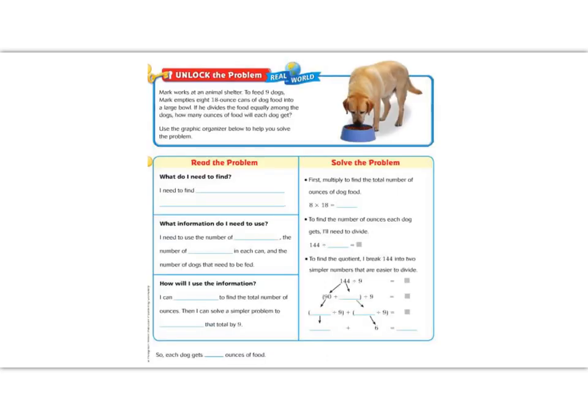Let's dive into our lesson by reading the Unlock the Problem. It says, Mark works at an animal shelter. To feed nine dogs, Mark empties eight 18-ounce cans of dog food into a large bowl. If he divides the food equally among the dogs, how many ounces of food will each dog get?